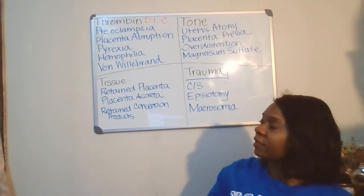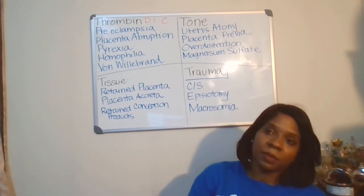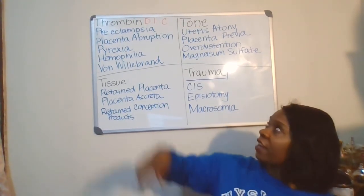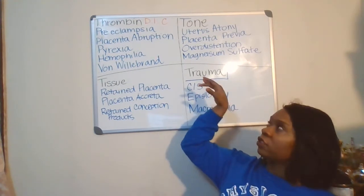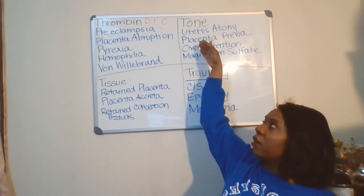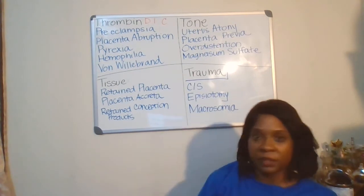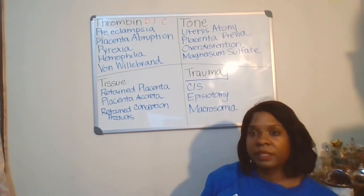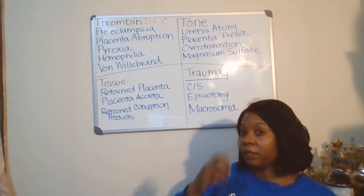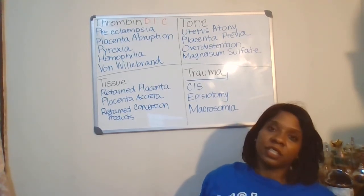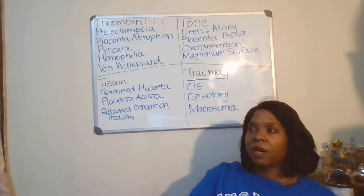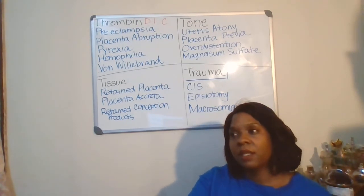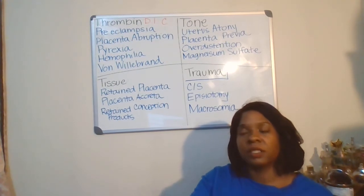Moving on — tissue. So retained placenta. Tissue problems are mostly in regards to placenta problems. You'll notice that thrombin, tone, and tissue are all in regards to placenta problems. The number one reason for postpartum hemorrhaging — as I mentioned in a previous video — is a placenta problem.